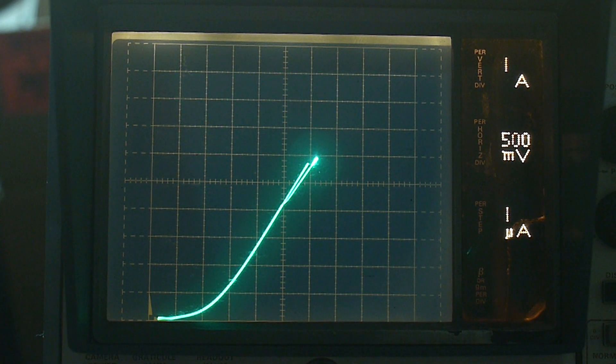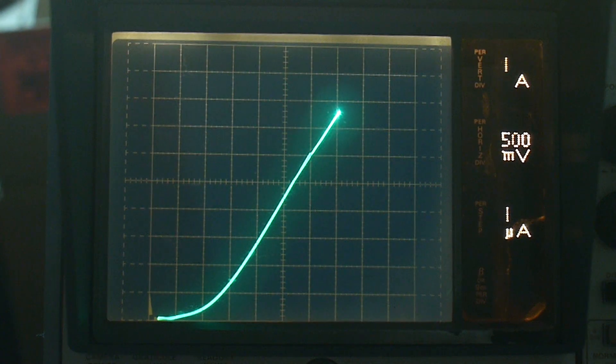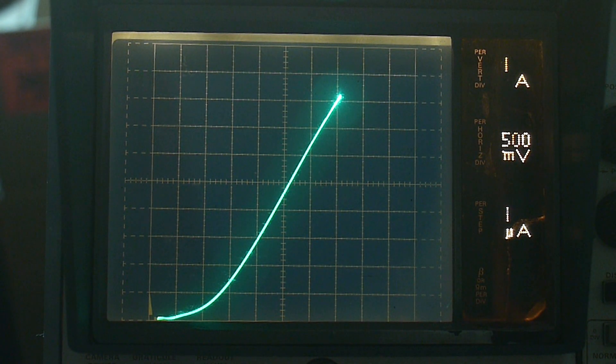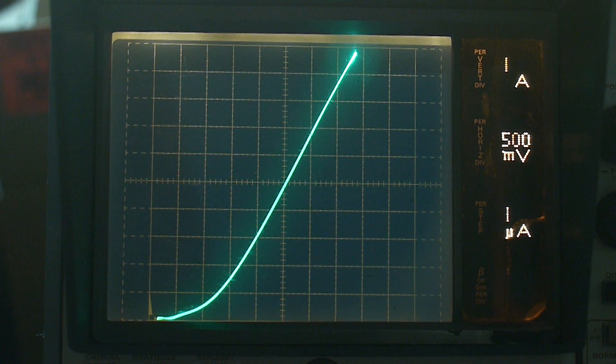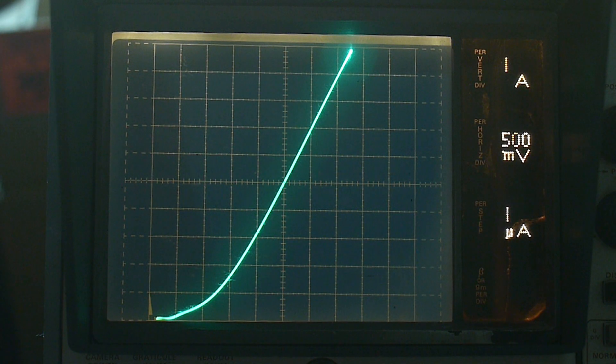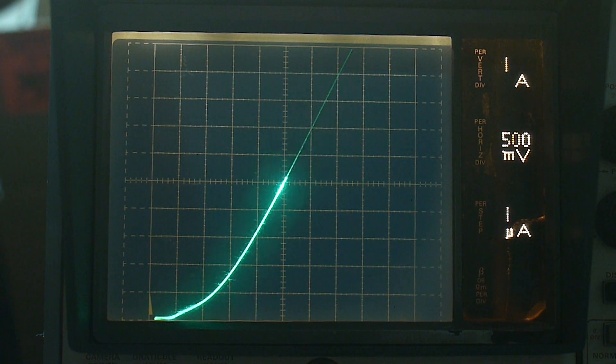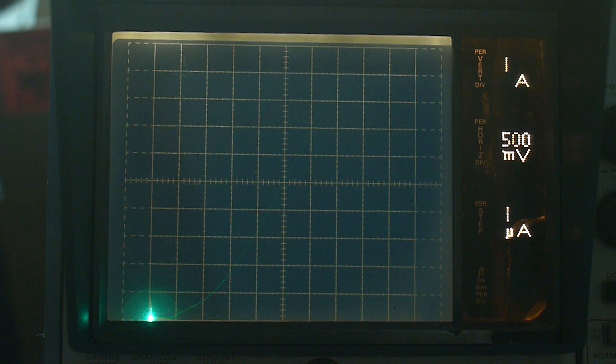5 amps, 6 amps, 7 amps. Look, it's bending over. 8 amps, 9 amps, 10 amps. I think I'm getting to the end of my curve tracer. I forget how many amps my curve tracer does.